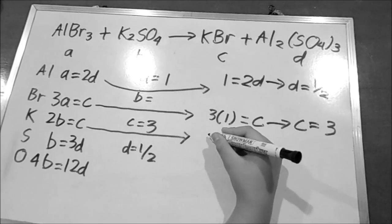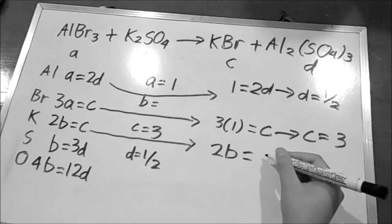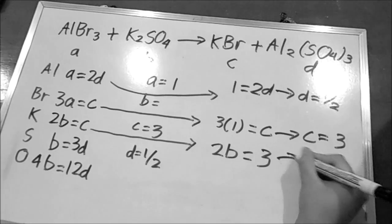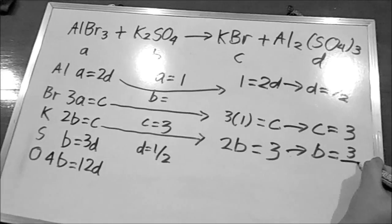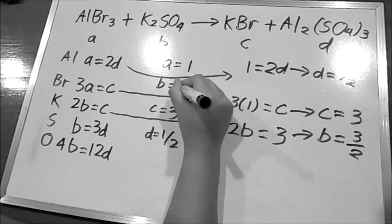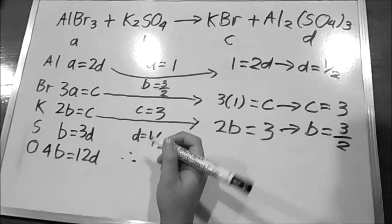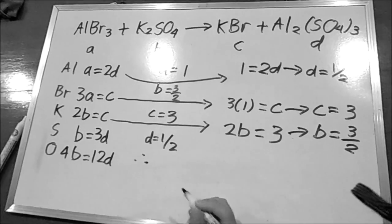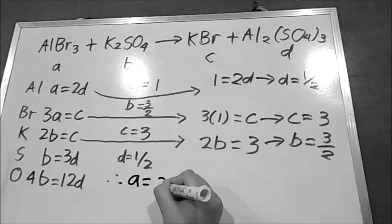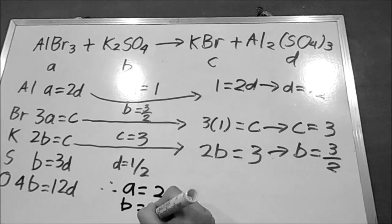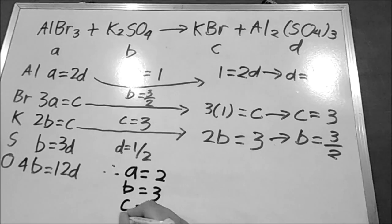And then we just need to find out B. So, 2B is equal to 3, which means B equals 3 over 2. And since we have to use whole numbers, we have to convert to the nearest whole number. So that A is equal to 2, B is equal to 3, C is equal to 6, and D is equal to 1.